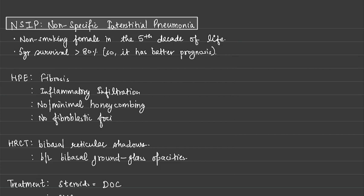In this video we will be talking about NSIP, that is Non-Specific Interstitial Pneumonia. It is another kind of ILD which comes in the unknown cause category, so it is basically idiopathic.